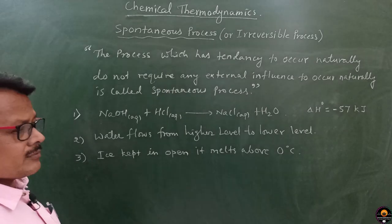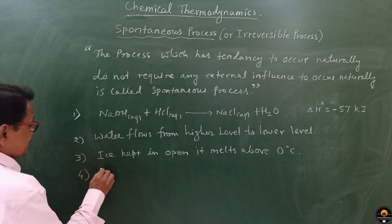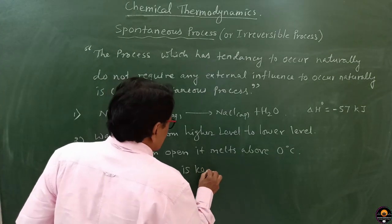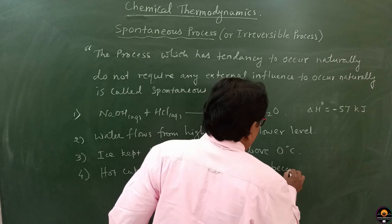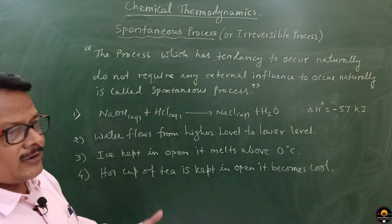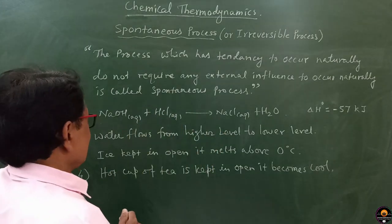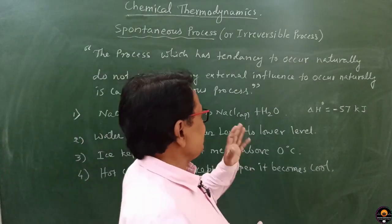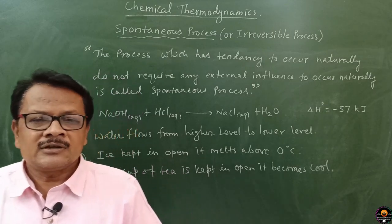We can also consider the example of a hot cup of tea kept in the open — it becomes cool after some time. So cooling of tea is a spontaneous process. Thus, cooling of tea, melting of ice, water flowing from higher to lower level, and when NaOH and HCl are mixed forming NaCl and H₂O — all these are spontaneous processes.